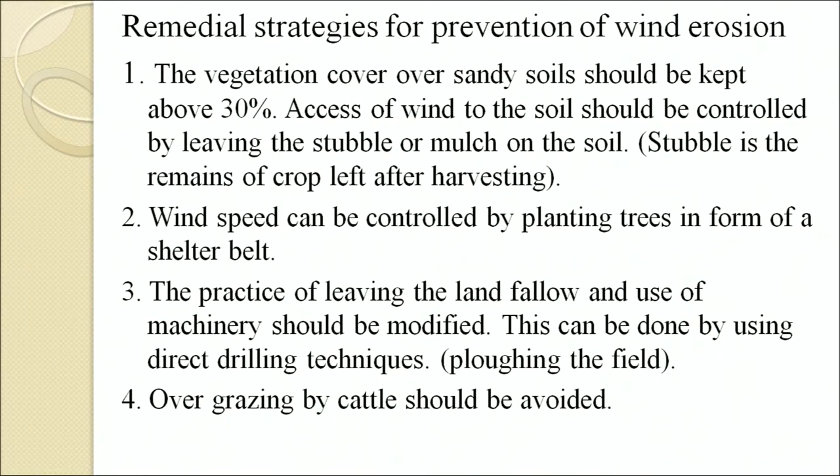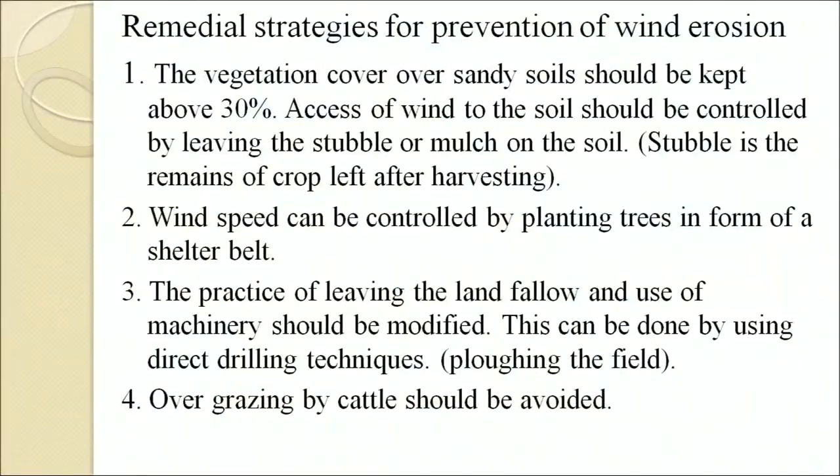Remedial strategies for wind erosion: vegetation cover over sandy soil should be kept at about 30 percent. Exposure of wind to the soil should be controlled by leaving stubble or mulch on the soil. Stubble is the remains of crop left after harvesting. Wind speed can be controlled by planting trees in the form of a shelter belt. The practice of leaving land fallow and the use of machinery should be modified. Overgrazing by cattle should be avoided.